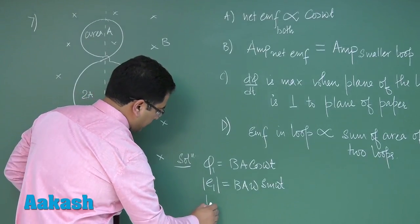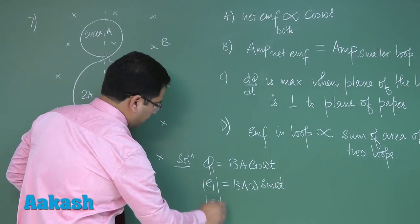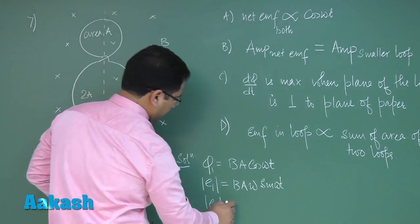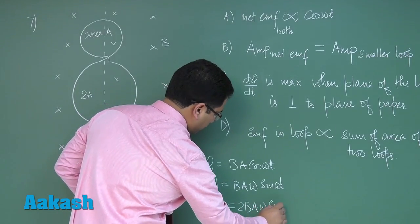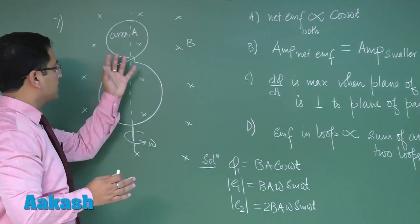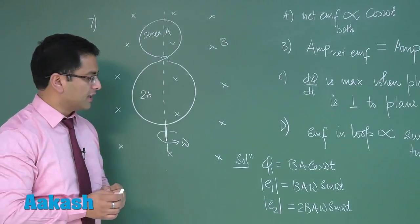The magnitude of EMF on the second loop would be 2 B A omega sine omega t because it's very clear everything is same except the area.